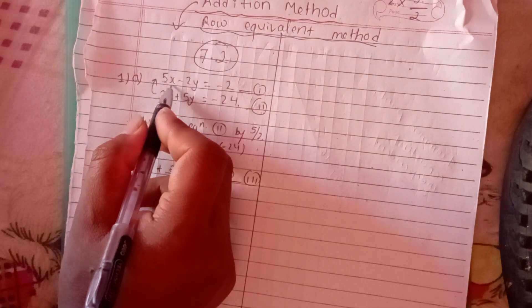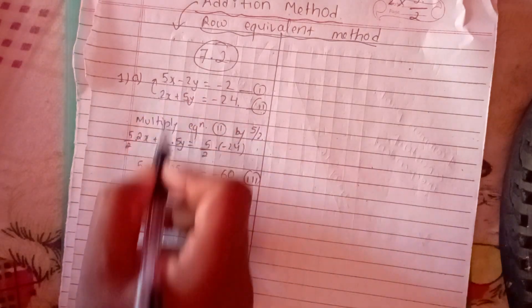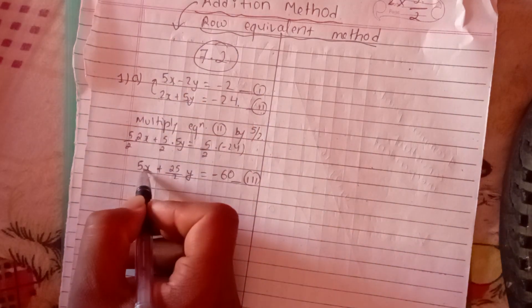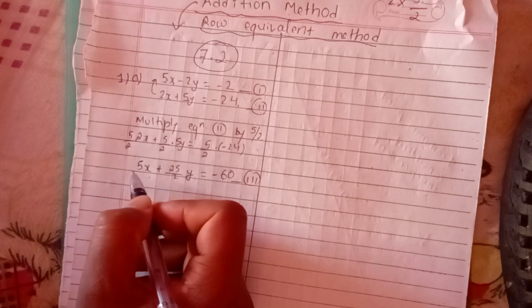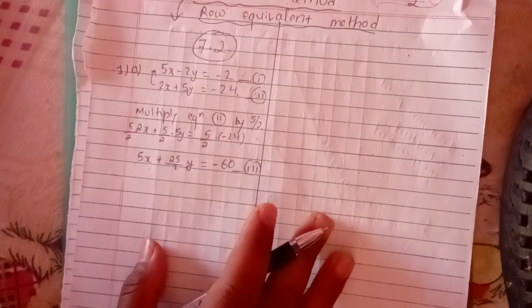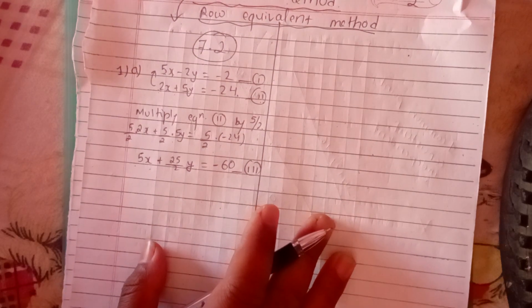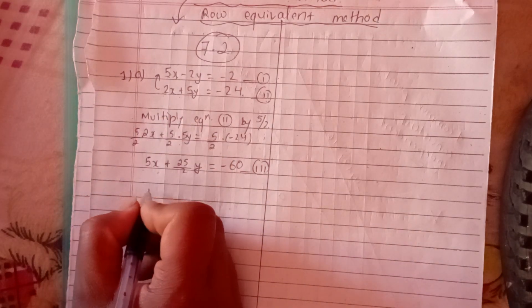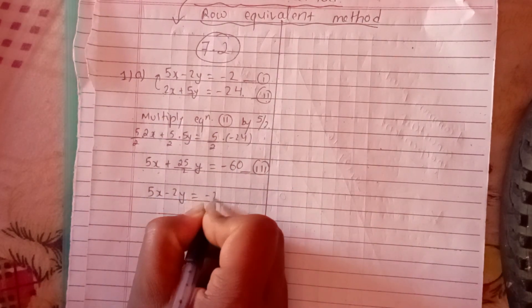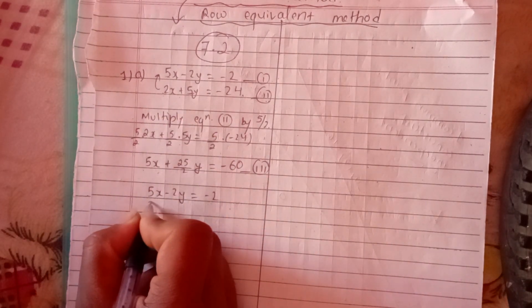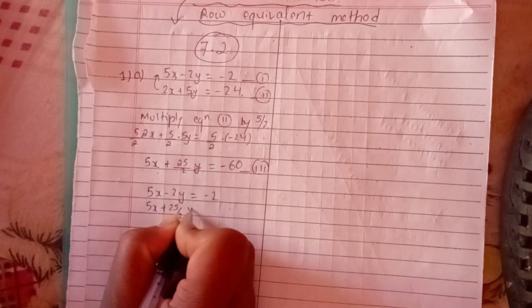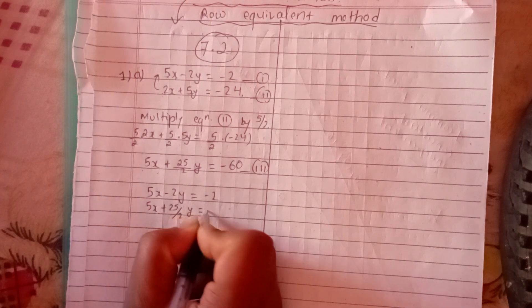Now we have equation 3. If we take equation 1 and equation 3, we have 5x plus 25 over 2 times y equals minus 60. We write out this equation combining all the terms.